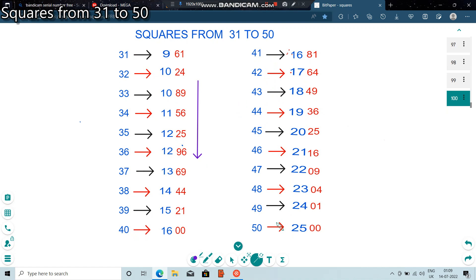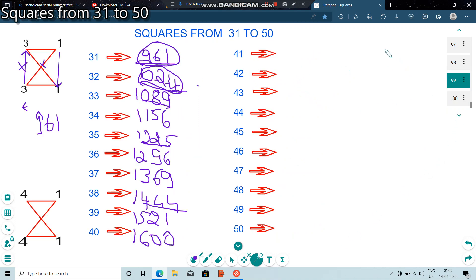So, in the similar manner, we can find the square from 41 to 50 also. For this, we just need to find the square of 41. Once we know the square of 41, then it will be easier. Same way as we found for 31, we are finding for 41. So, 4 into 4 will be 16. 4 plus 4 will be 8. 1 into 1 will be 1. 4 into 4, 16. 4 into 1 plus 4 into 1, that is 8. And 1 into 1, that is 1. 16. So, we got this number 1681.